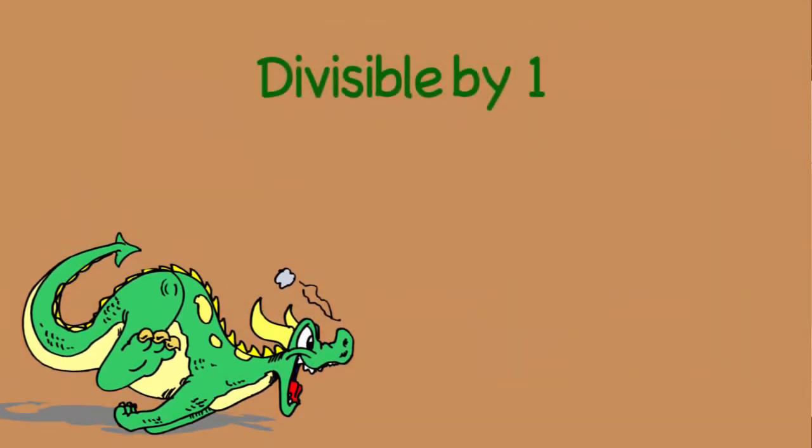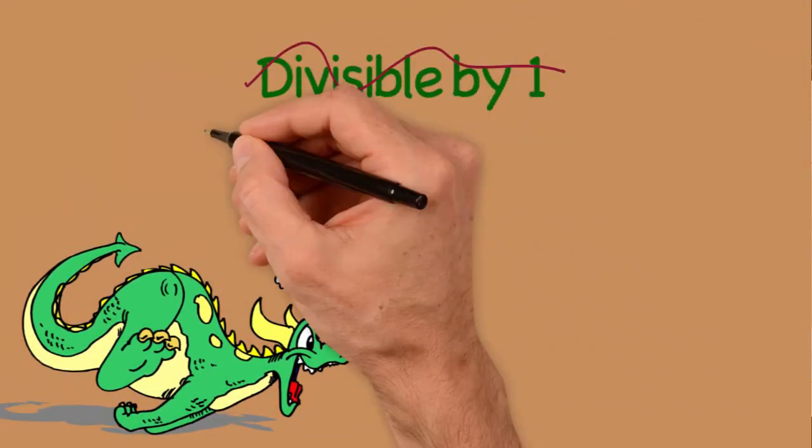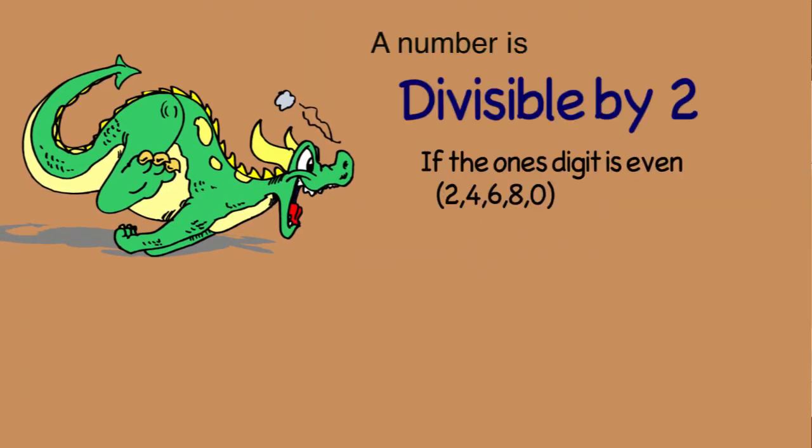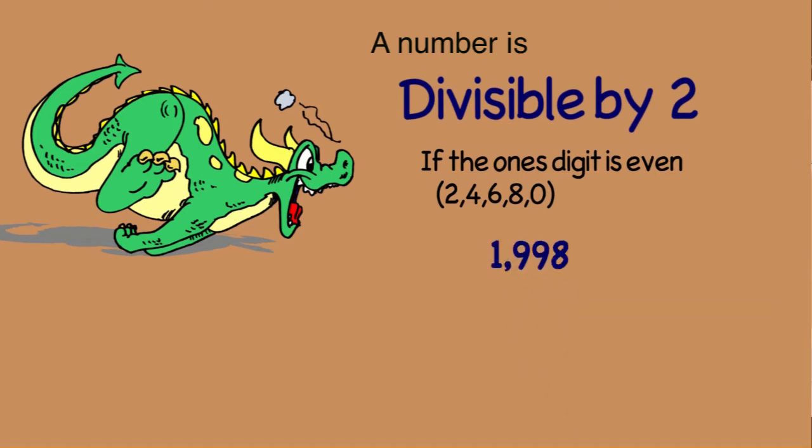Okay, so we're not doing 1 because 1 goes into everything. So this is how our number, 1,998, is divisible by 2. Since the 1 digit is even, and the rule for 2 is all numbers with even digits in the 1 place are divisible by 2, then 1,998 is divisible by 2.